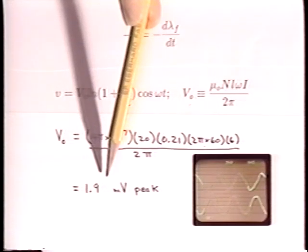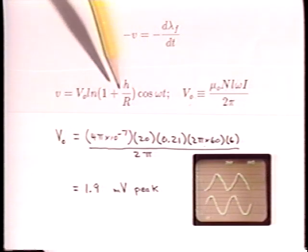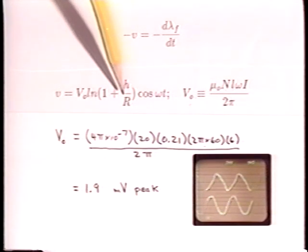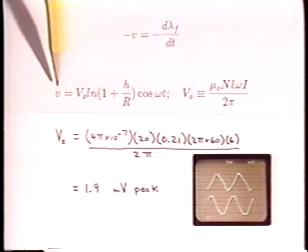With the spacing R equal to 6 and a half centimeters, the peak coil voltage measured at the terminals is about 2 millivolts peak.